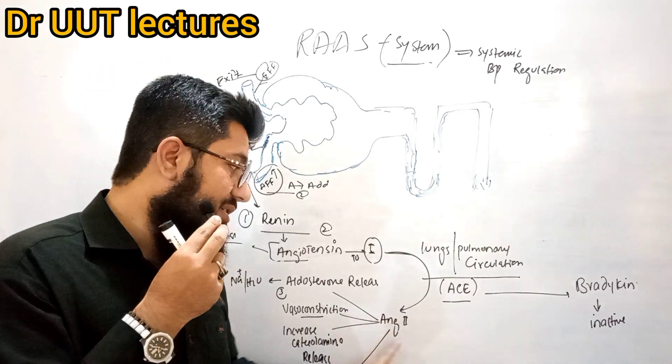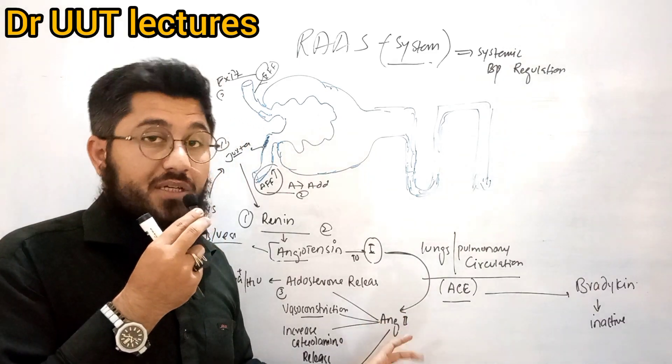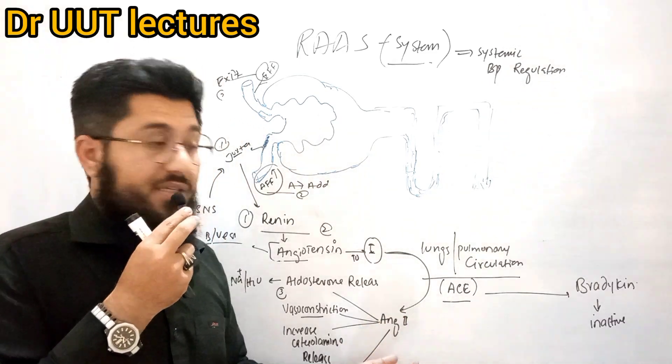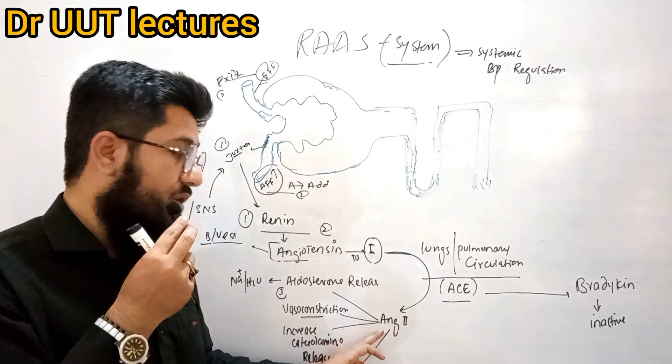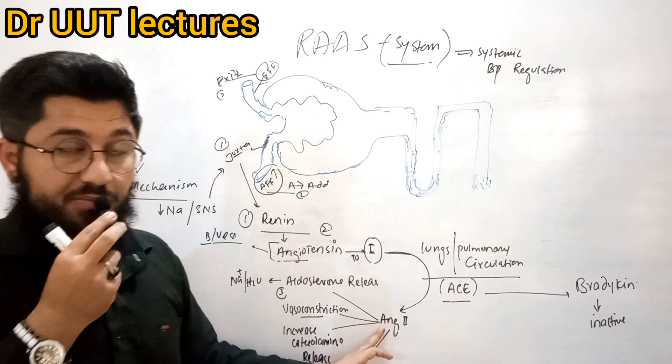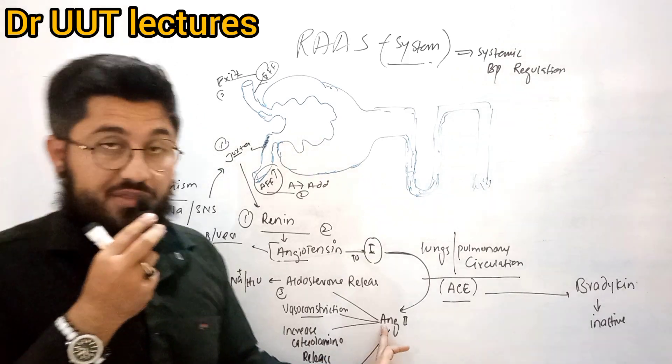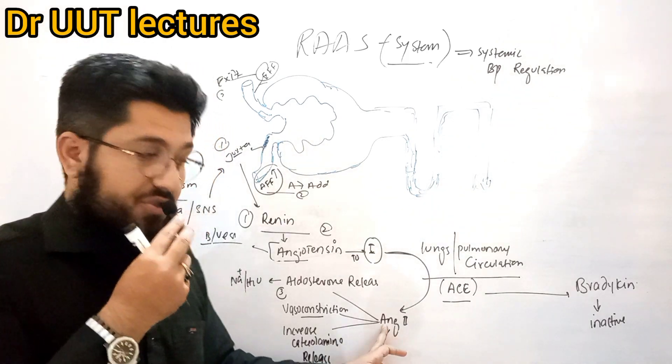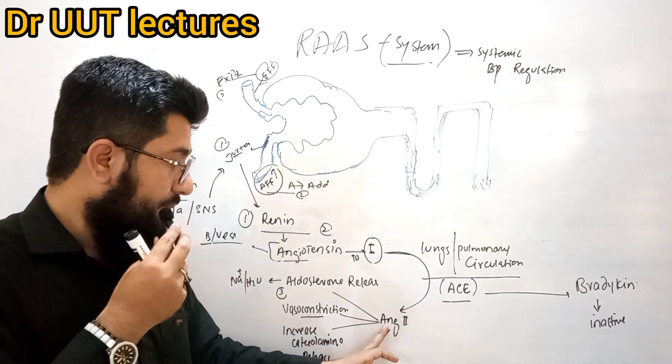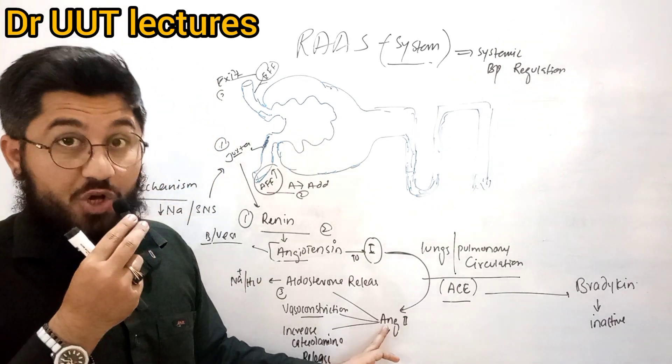During pulmonary circulation, angiotensin converting enzyme (ACE) present in the lungs is responsible for converting angiotensin 1 into angiotensin 2. This angiotensin 2 is the key active product that performs very important jobs.